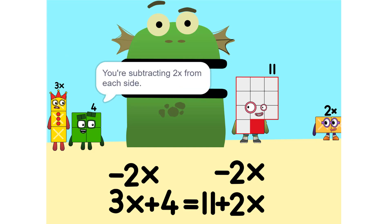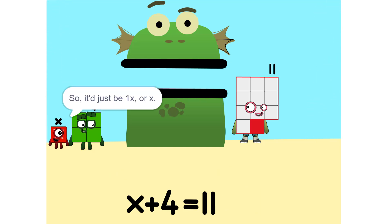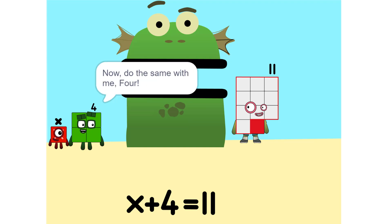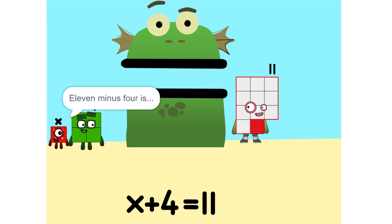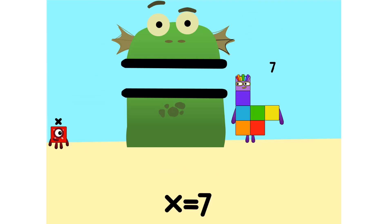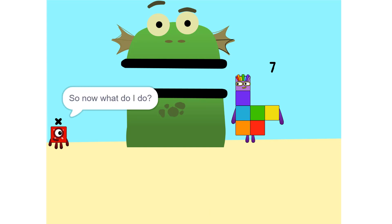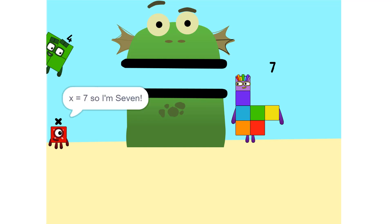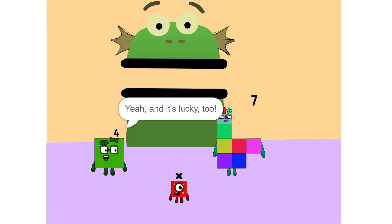Why? Think of it this way — you're subtracting 2x from each side. So it'd just be 1x, or x. Correct. Now do the same with me: 4. 11 minus 4 is 7. So now what do I do? What's there left to do? X equals 7, so I'm 7!